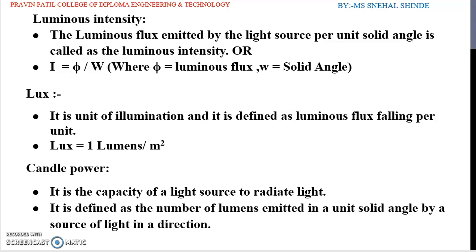This is the definition of the luminous intensity. The formula for it is I equal to phi divided by W where phi is the luminous flux and W is the solid angle. This was the definition of the luminous intensity.